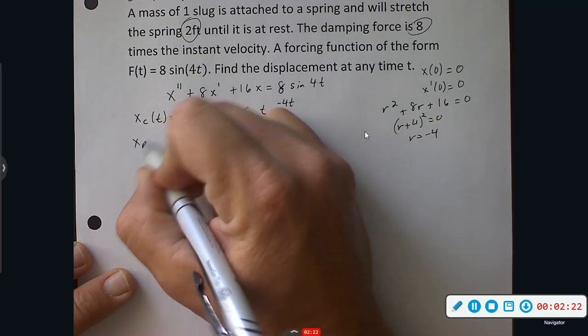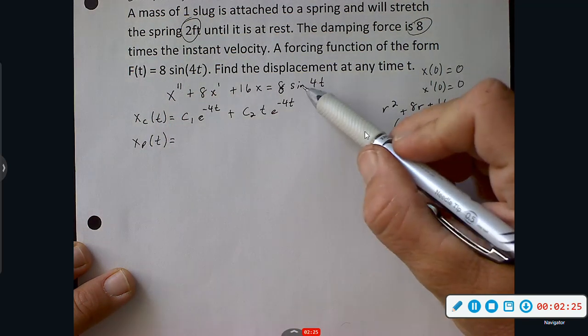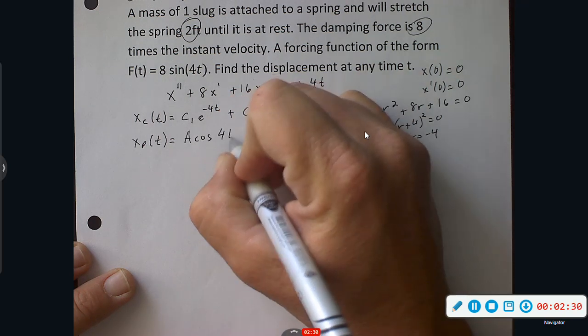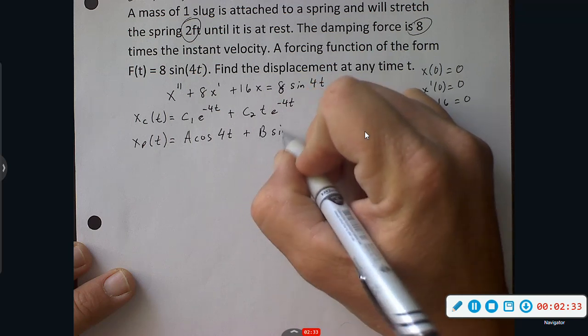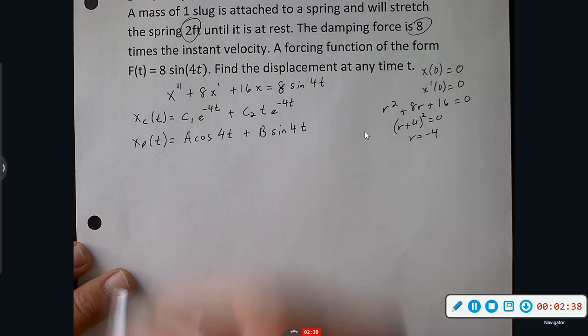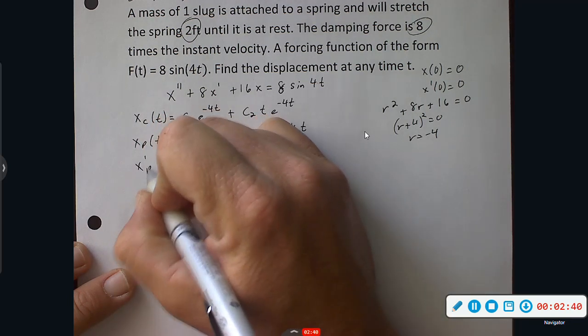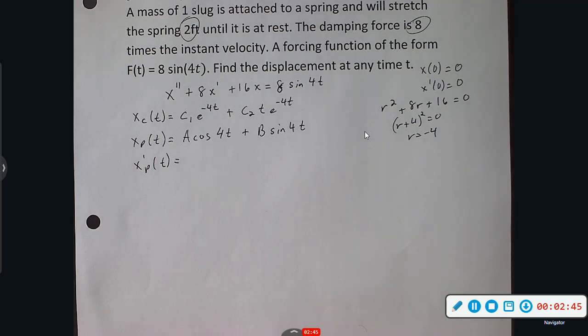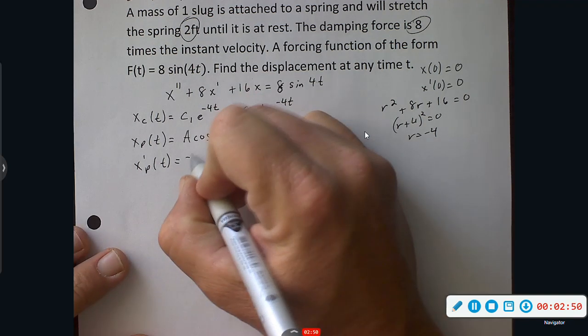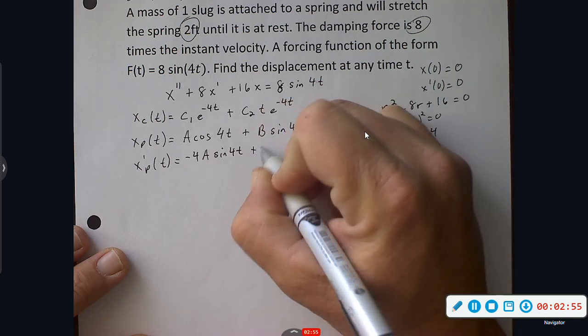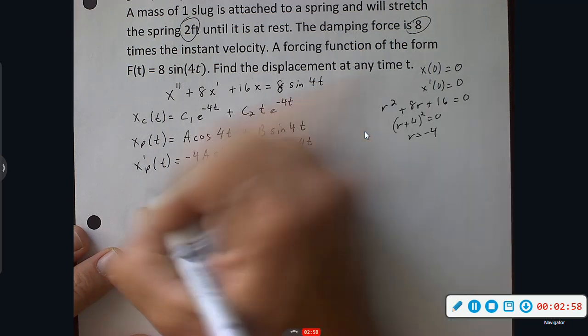Now let's define our Xp(T). Xp(T) is in terms of sine, so we would like it to be A cosine 4T plus B sine 4T. Since there's no sines or cosines here, we're clear to do that. So let's take some derivatives. Cosine, this should all look familiar because they do the exact same thing every time. Cosine, negative sine, negative four pops out. Negative 4A sine 4T. Again, same thing here, 4B cosine 4T.